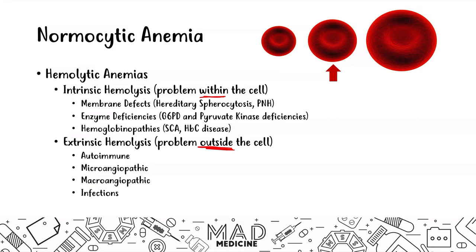Today we're going to be discussing hereditary spherocytosis, which is a membrane defect — a problem occurring with the red blood cell membrane. Because of these hemolytic anemias, because you are lysing red blood cells, your bone marrow is going to realize the loss of red blood cells and amp up production, and that's going to cause an increase in your reticulocyte count.